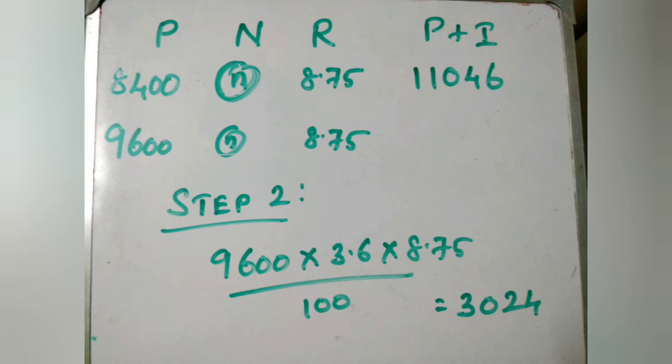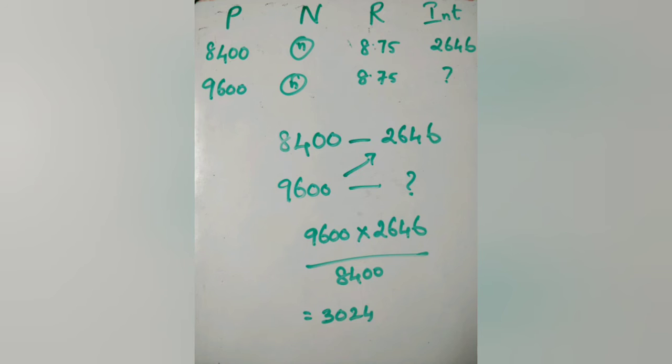I told you I'll solve this in just one step. The question says same rate and same period—that's the key. We can use this formula: we know for Rs.8,400 the interest is Rs.2,646, and we need to find the interest for Rs.9,600, which is directly proportional. Just do cross multiplication: 9,600 × 2,646 / 8,400.